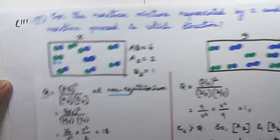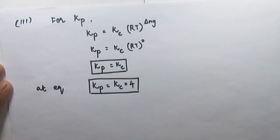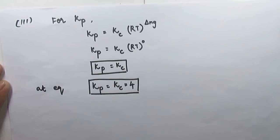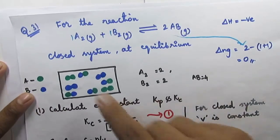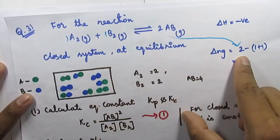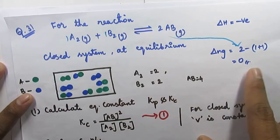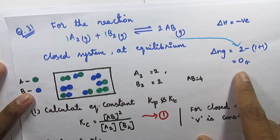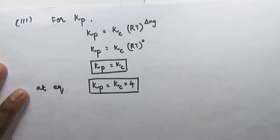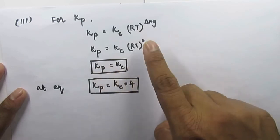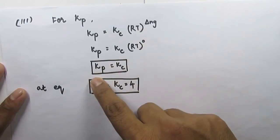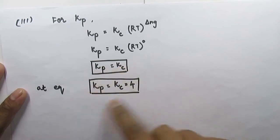Now let's discuss the third part. Looking at Kp and Kc: we know the relationship. If you look at delta nG, the delta nG value is 0. So Kp equals Kc times RT raised to the power 0, and anything raised to power 0 equals 1. Therefore, Kp is equal to Kc.